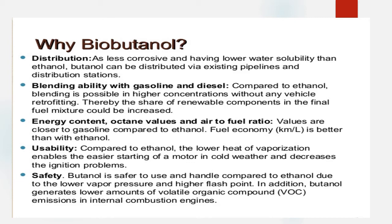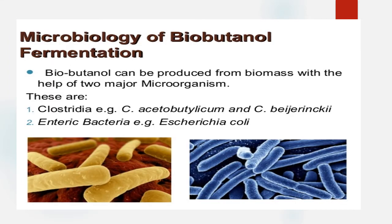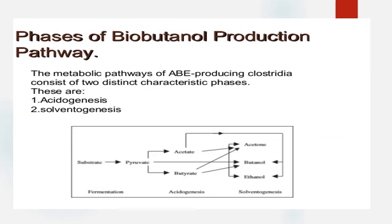The microorganisms that can ferment and produce butanol fall into two groups: Clostridia and enteric bacteria. These are the commercially utilized organisms. Under Clostridia, Clostridium acetobutylicum and Clostridium beijerinckii are used, and E. coli represents the enteric bacteria that can also undergo fermentation for butanol production.